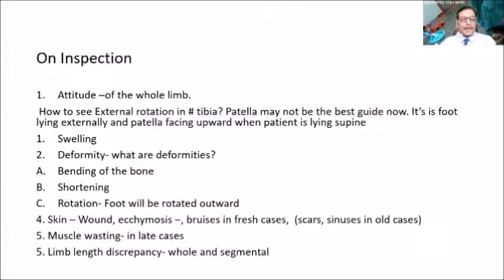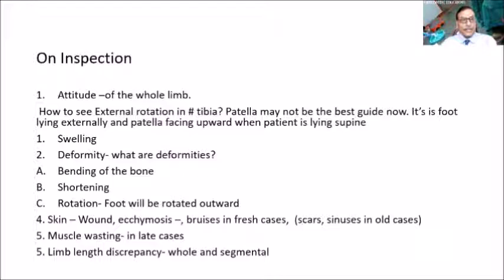On inspection, you will see external rotation — the patella is not the best guide here as it remains facing upward; the foot will be in the external rotation position. Swelling and deformity are to be noted. Deformity types include bending or angulation, shortening, and rotation. Skin should be inspected for bruises, and in old cases for scars or sinuses. Muscle wasting is seen only in late-presenting cases. Limb length discrepancy is assessed by looking at the medial malleolus for whole limb length, and the superior pole of the patella for segmental assessment.